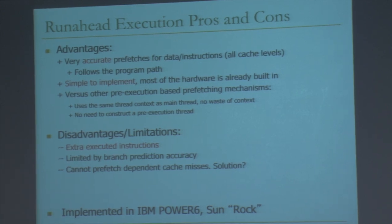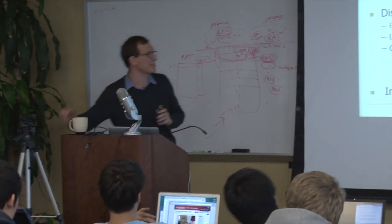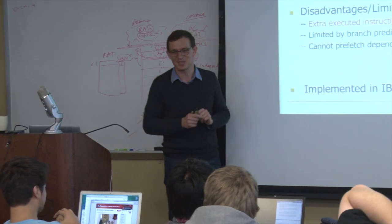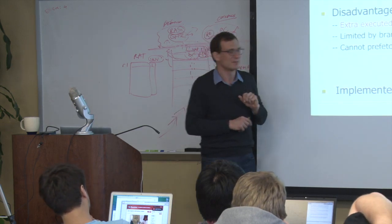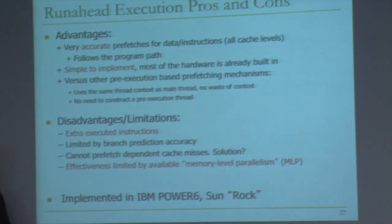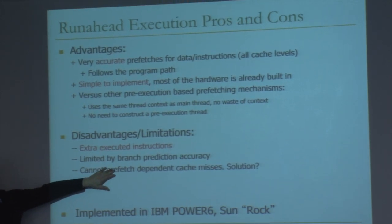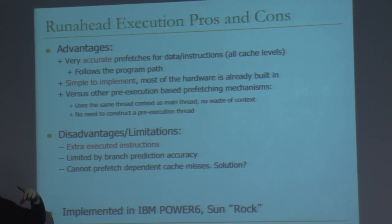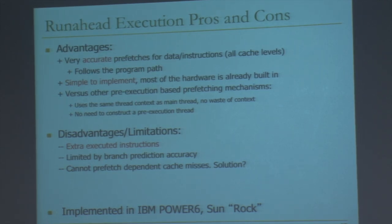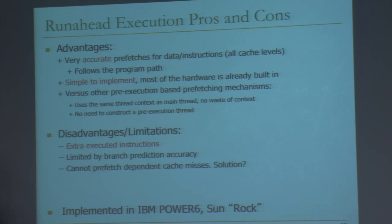One potential solution to the invalid-dependent load problem is load address prediction. You could predict the value that's produced by the ancestor load that caused the cache miss — and then implicitly you're predicting the address of the dependent load. Alternatively, you could predict the address of the load that has an invalid source. We'll try to address this with a prediction mechanism described later. The effectiveness of run-ahead is also limited by available memory level parallelism; if long latency cache misses are far apart in the program, you may pre-execute many instructions without seeing any cache miss, leading to inefficiency.